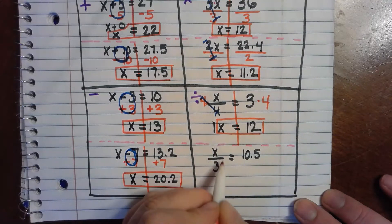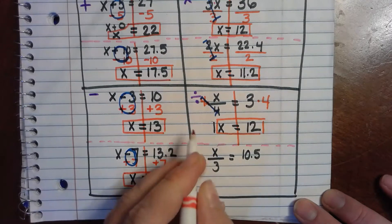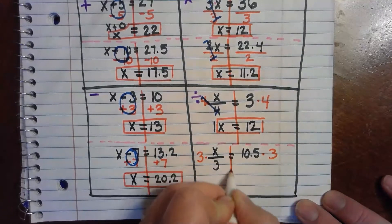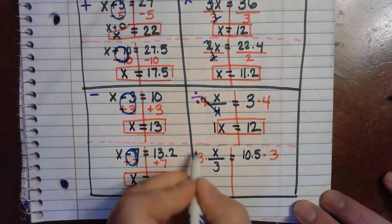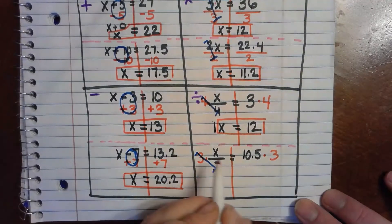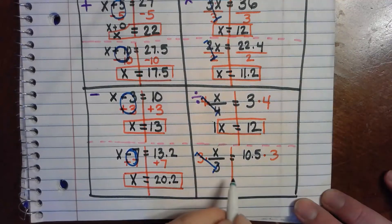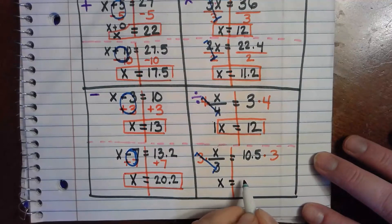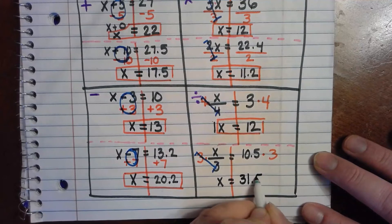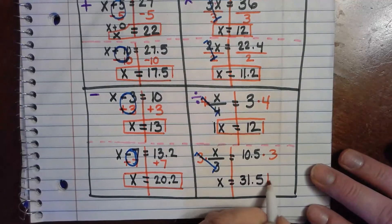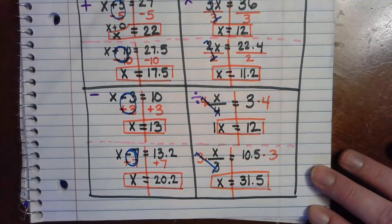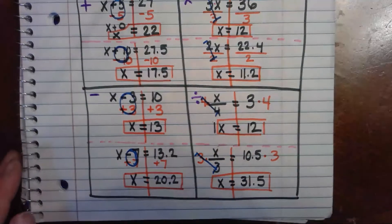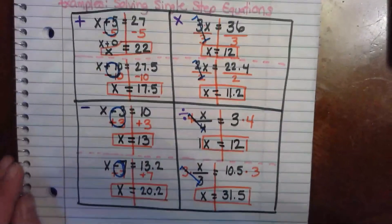Now x divided by 3 equals 10.5. We undo the division by multiplying by 3. If we do it to one side we do it to the other. Those cancel to give 1, so we're left with just x. On the other side we have 10.5 times 3, which is 31.5. So x equals 31.5, meaning 31.5 divided by 3 is 10.5. This is how we solve single step equations — just use the inverse operation.